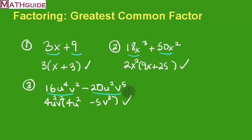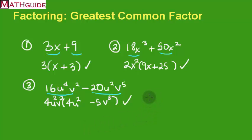I factored completely using the largest common factor, also called the GCF — greatest common factor. If the remaining terms still have something in common, whether a number or a letter, you know you haven't factored out enough; you need to put out a higher number or more letters. Make sure you go back to MathGuide.com and check out the interactive lessons, quizzes, activities, and other videos.